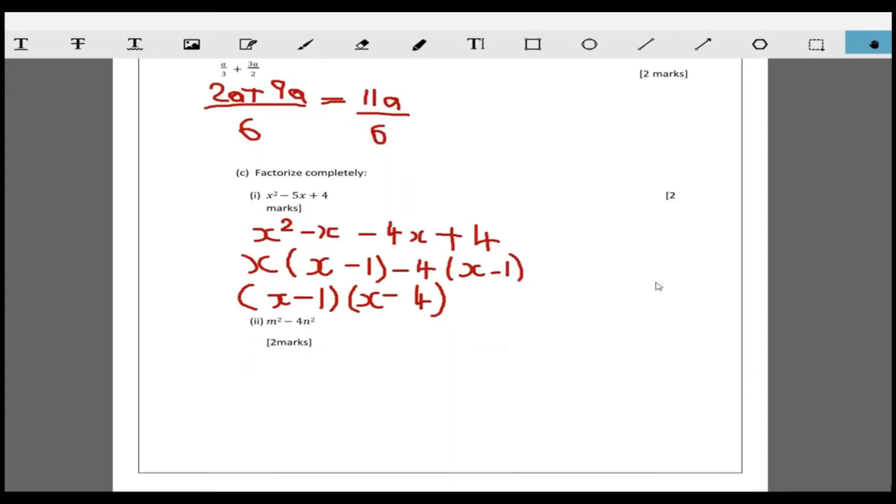Now part two has m square minus 4n square and it asks us to factorize this. Clearly this is the difference of two squares, so what we're going to do is rewrite this as m squared minus - now 4n square can be written as 2n all squared. And so we can apply difference of two squares to get m minus 2n times m plus 2n, and this is factorized.